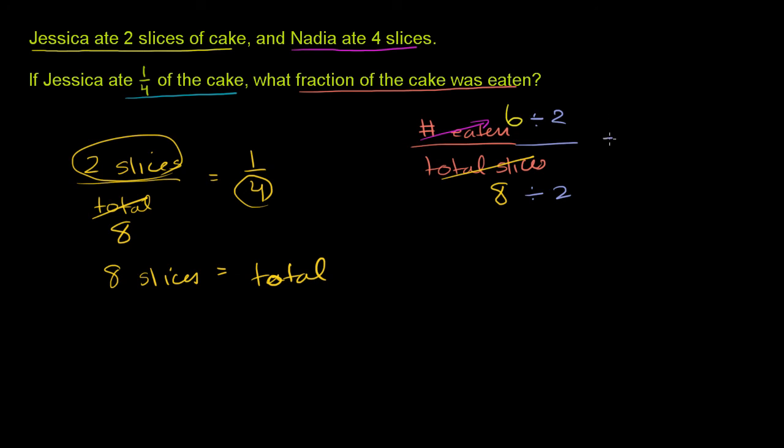Six divided by two is three. Eight divided by two is four. So three fourths of the cake was eaten.